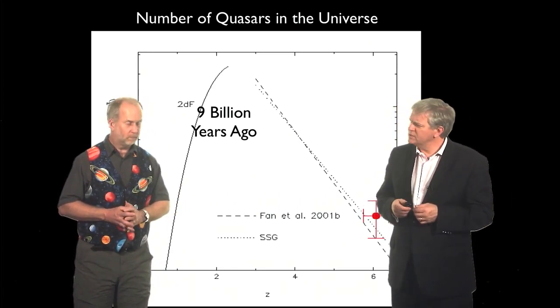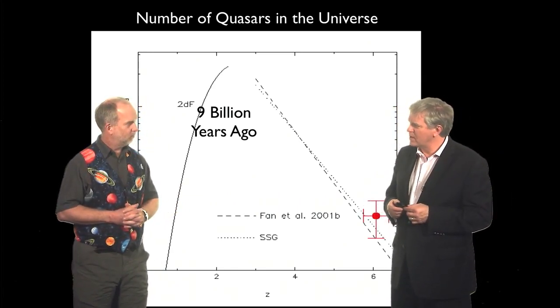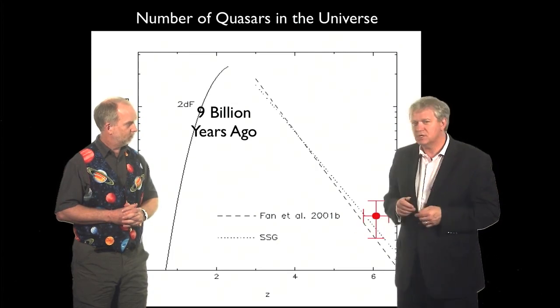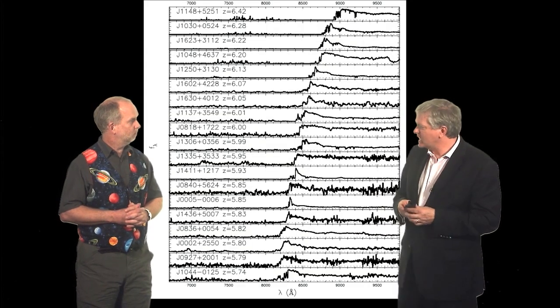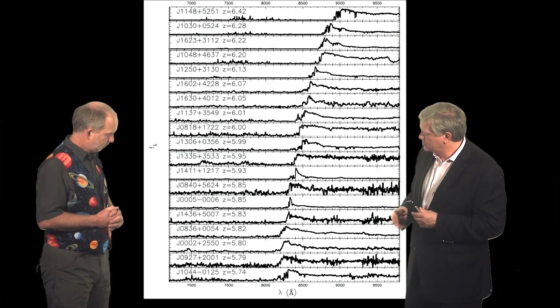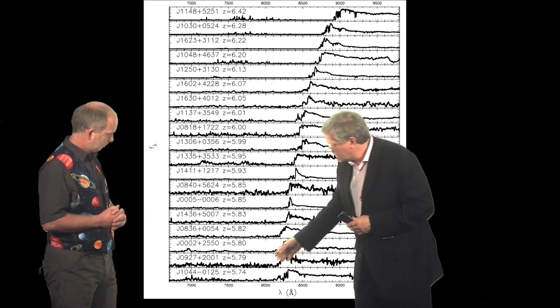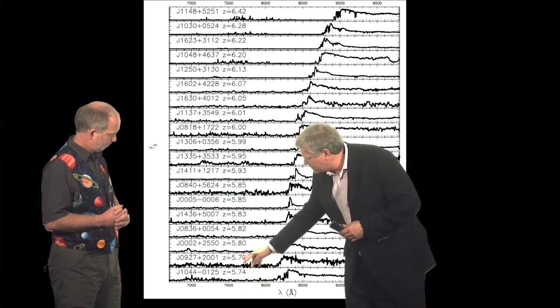Right. And so there is an interesting surprise, though, that came out of these really high redshift ones, which is looking at that Lyman alpha forest. You can see, as we look at a redshift of 5.7, 5.8, there's a bunch of spectra of quasars ordered by their redshift.